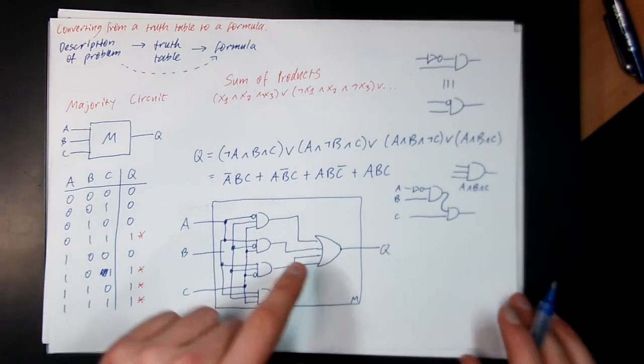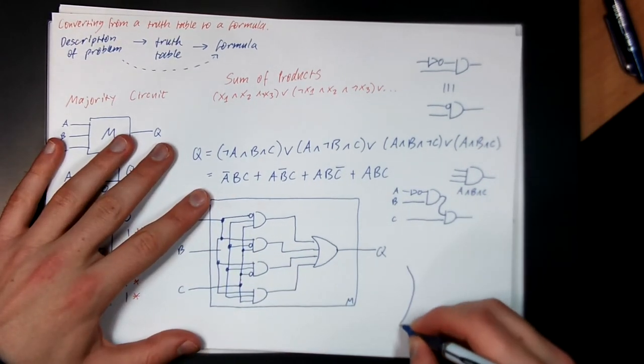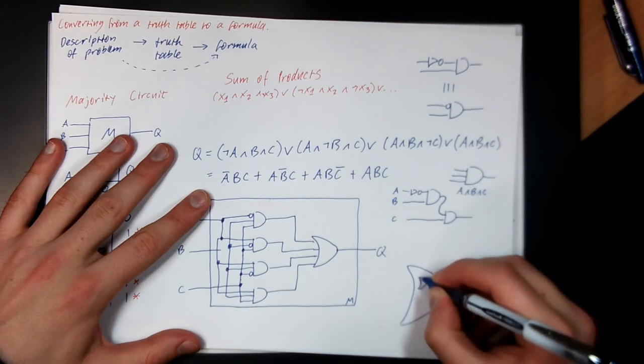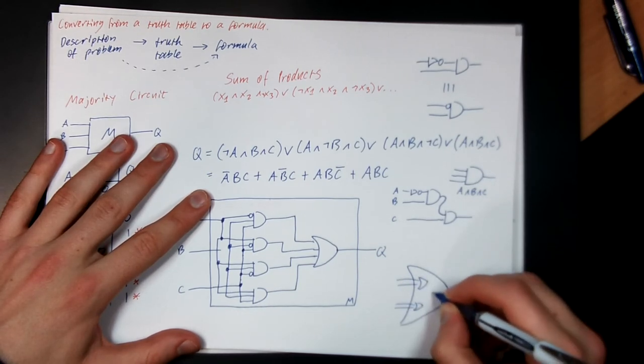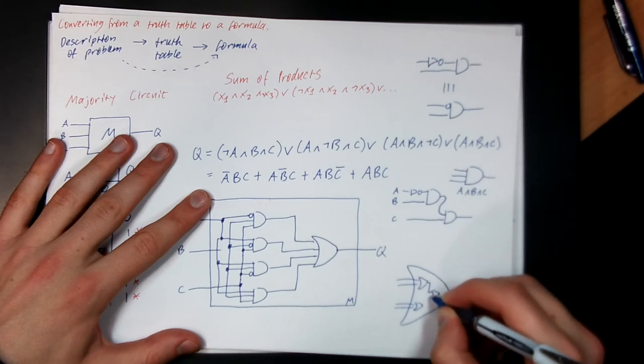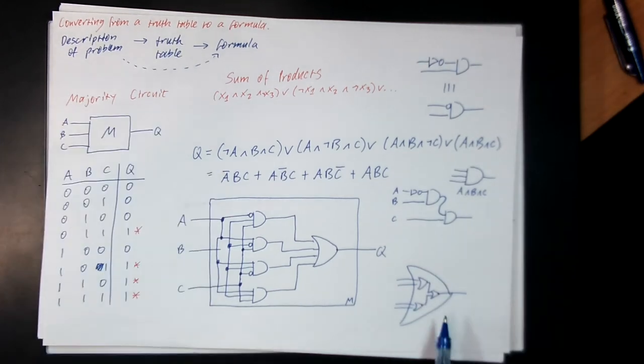This big gate here, internally there's nothing really clever going on inside. It just ORs the inputs together, using several daisy-chained OR gates. Like this. So, inside a big four input OR gate, that's what it looks like inside.